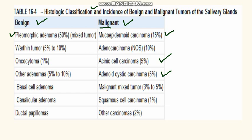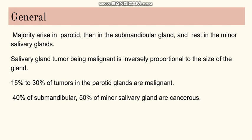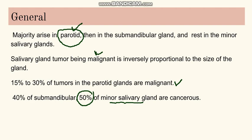Now going to some of the general features: most of the salivary gland tumours are found in the parotid gland. Others are found in the submandibular gland, or some are found in the minor salivary glands or in the sublingual gland. Most salivary gland tumours are benign, and the likelihood of malignancy is inversely proportional to the size of the gland. The parotid is the largest gland and only 15 to 30% of its tumours are malignant, whereas in the minor salivary glands around 50% of tumours are malignant.